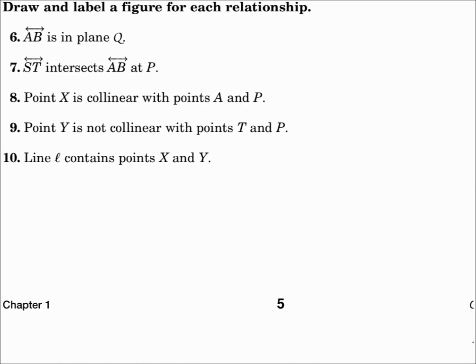Number 9. Point Y is not collinear with points T and P. So, that means they're not on the same line. A good way to draw that is to show that points T and P are on the same line. And then point Y is not. It's up here somewhere.